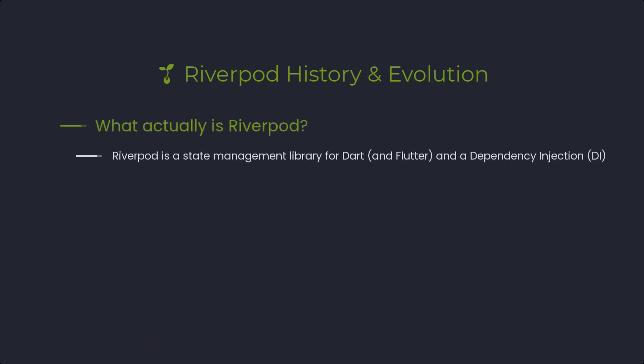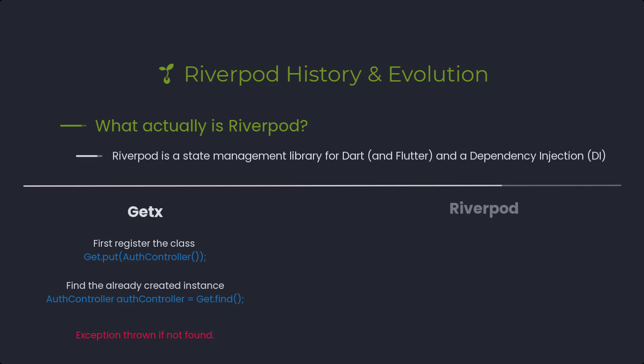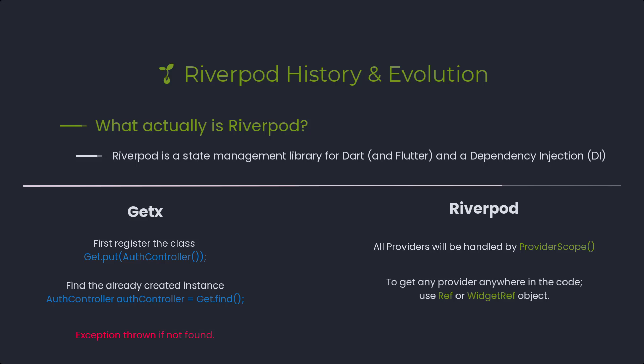So what is Riverpod? Riverpod is a Dart-native state management and dependency injection library for Flutter — it is written specifically in the Dart language. I focus on dependency injection because if you're coming from GetX or Provider, you know we have to handle dependencies individually. For example, if you forget to call Get.put(AuthController) before calling Get.find, you'll get an exception. That is the dependency injection problem we have to manually handle in GetX. But in Riverpod, we don't have to worry about dependency injection at all — it is handled efficiently by itself.